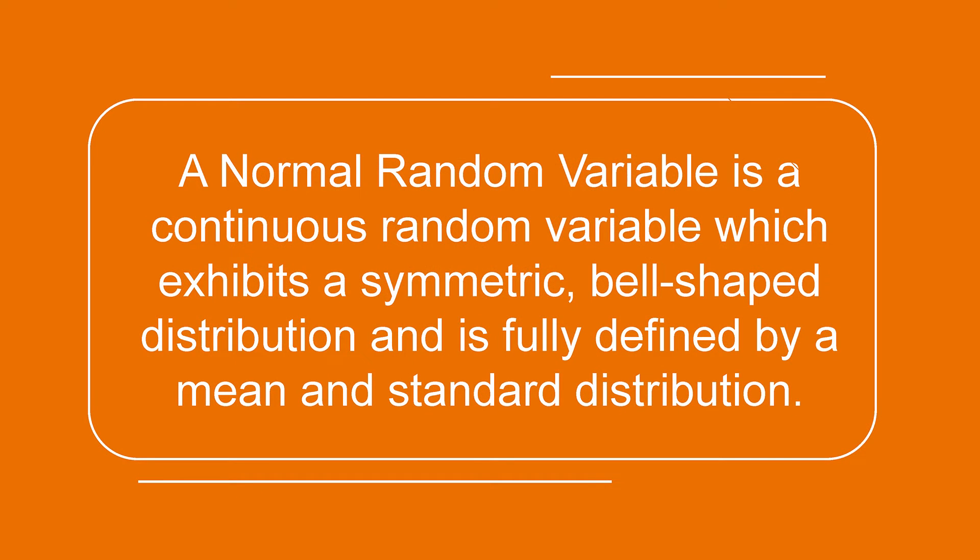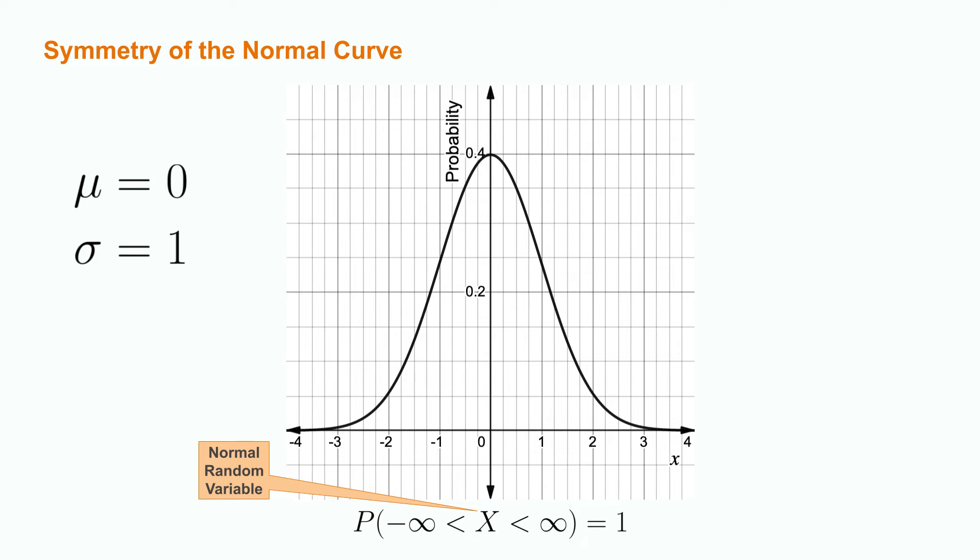Definitionally, a normal random variable is a continuous random variable which exhibits a symmetric bell-shaped distribution and is fully defined by a mean and standard deviation. These features are mathematically significant for us and lead us to several important properties. First, let's focus on the symmetry of the normal curve. We should begin by reminding you that the sum over an entire range of a probability distribution has to be equal to one. A normal variable, denoted as capital X, is continuous.